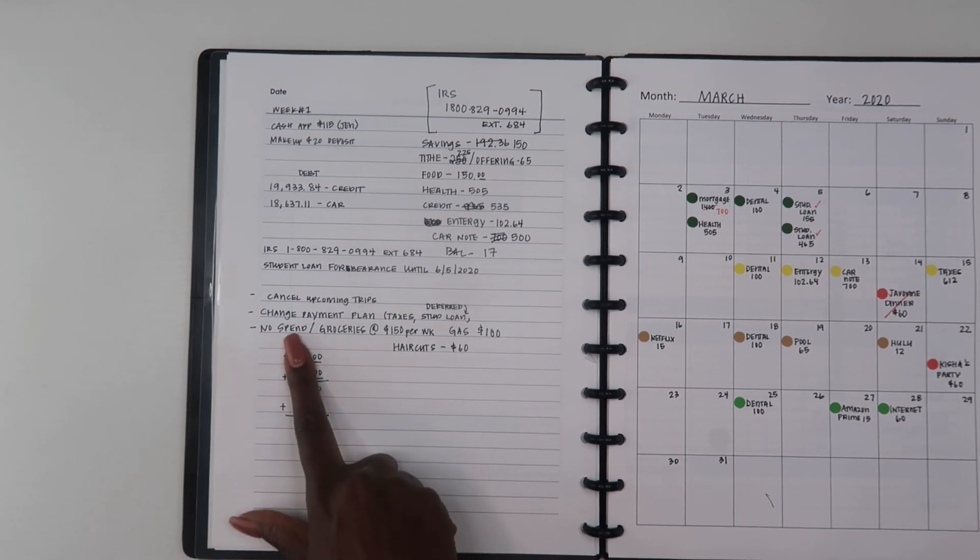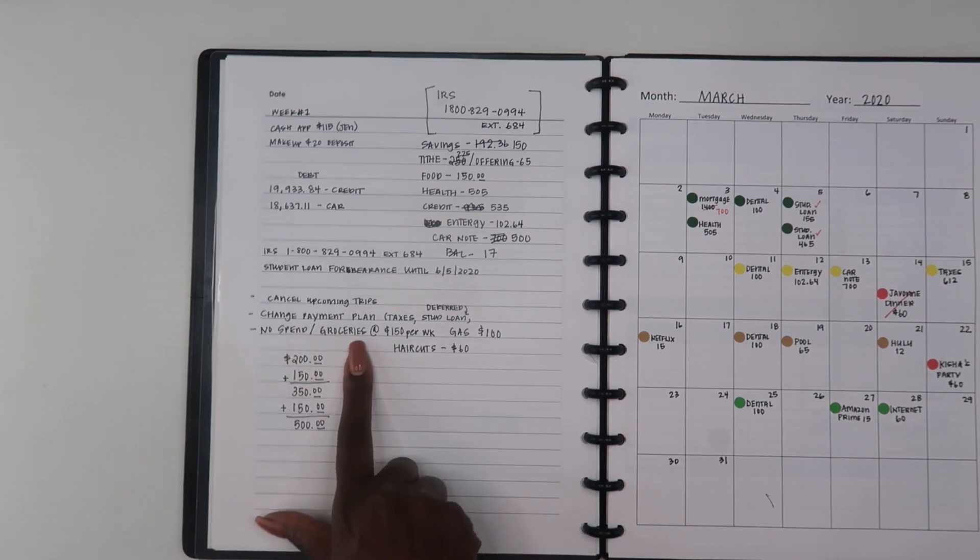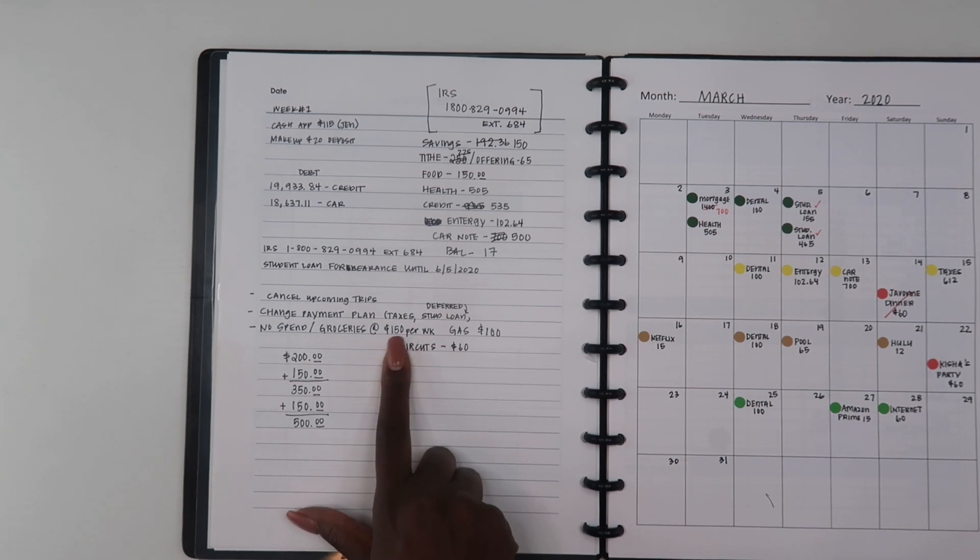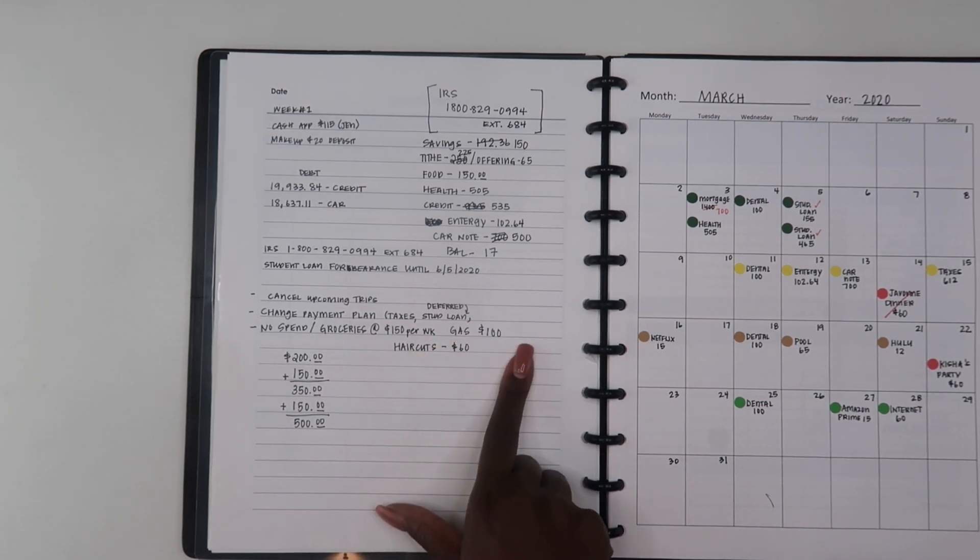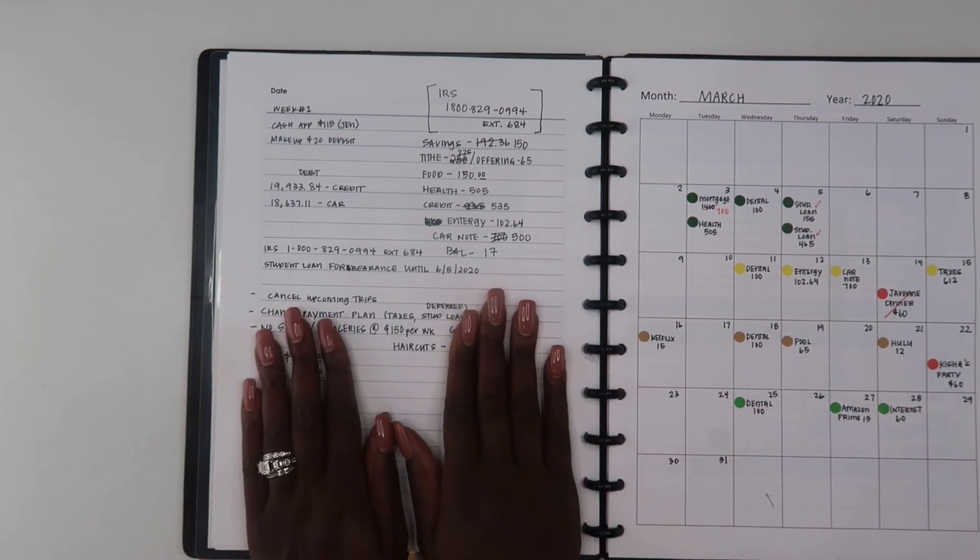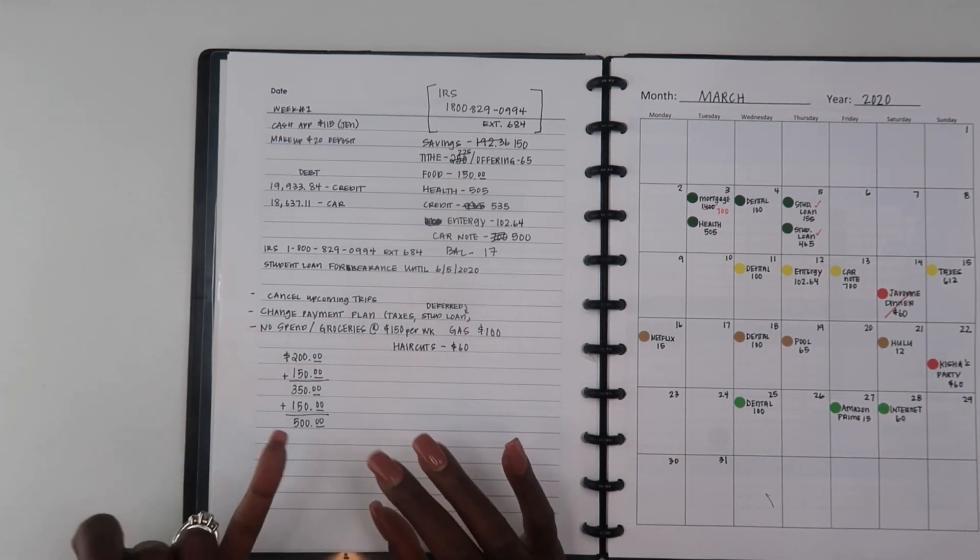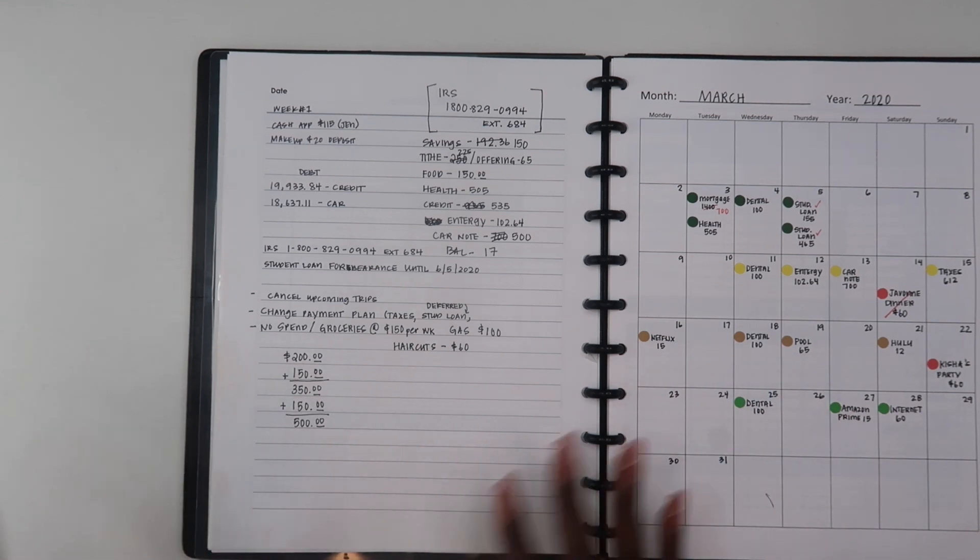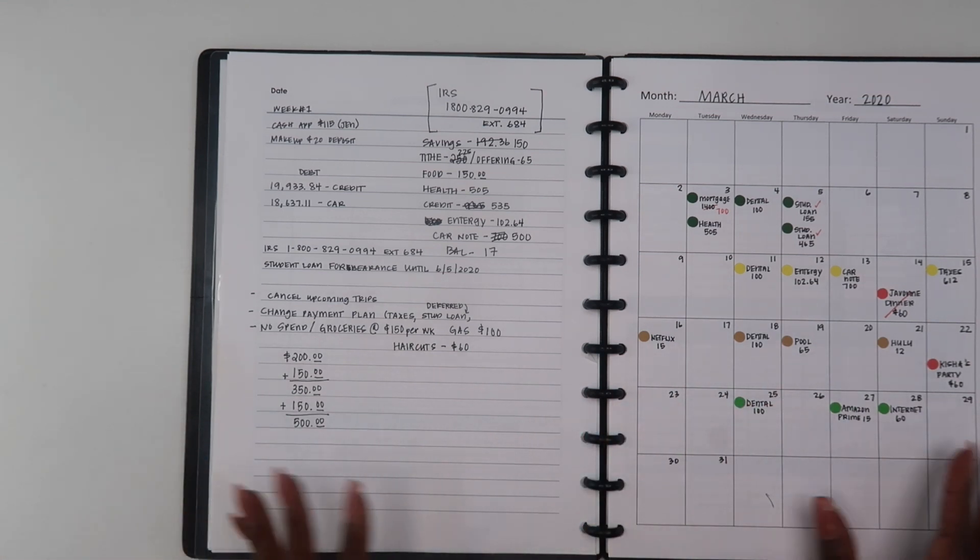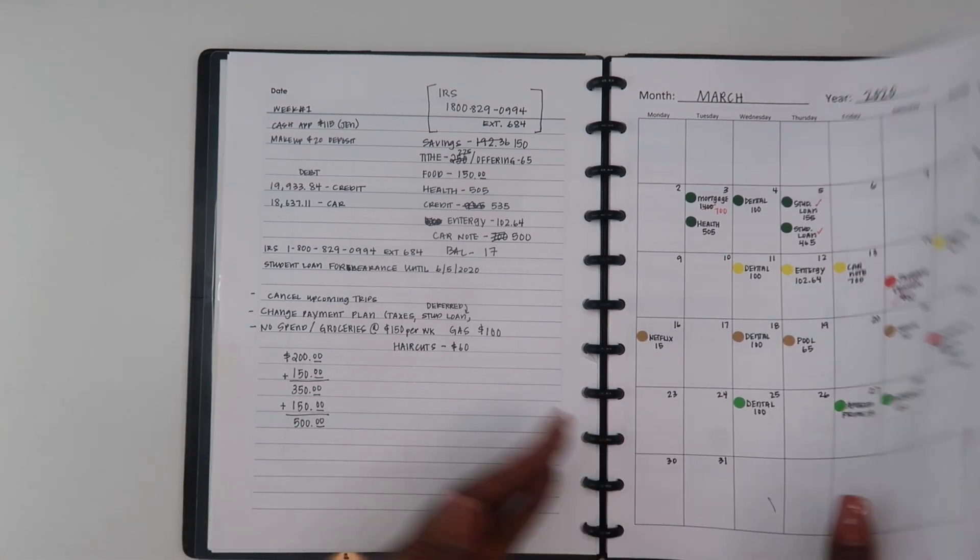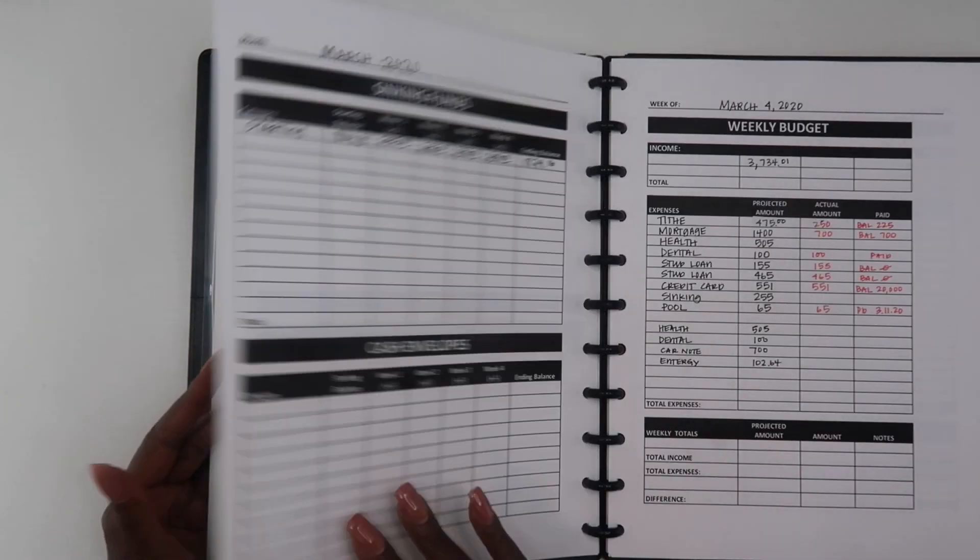We are currently on a no-spend month so that means our groceries are set at $150 a week and gas is at $100. That's it, we are not spending on anything else, no clothing budget, no anything else until we get past this. So now I'm going to do next week's budget.